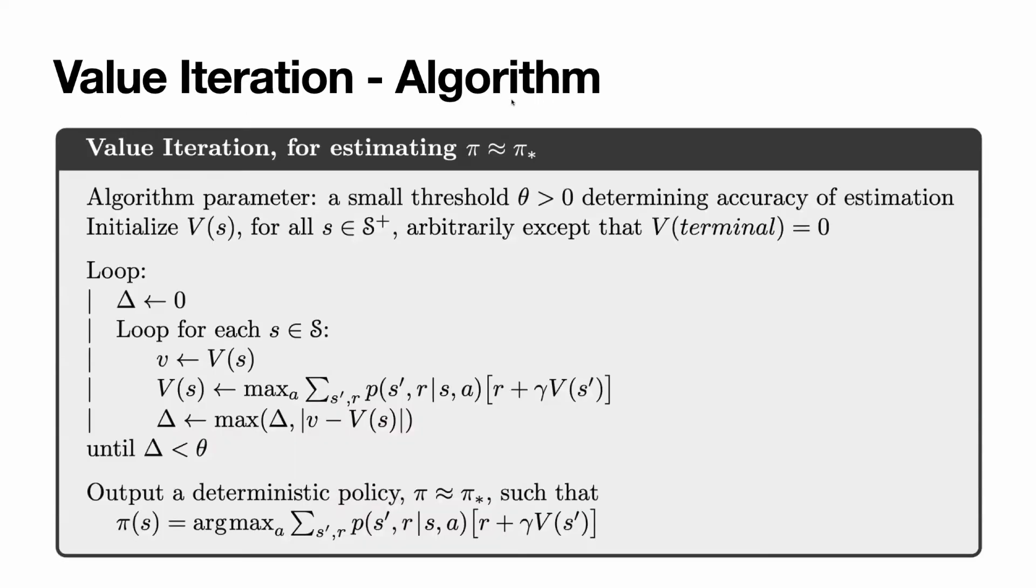Here is the algorithm for value iteration. For estimating policy, which is optimal, there are a number of parameters. We will have a small threshold, larger than zero,